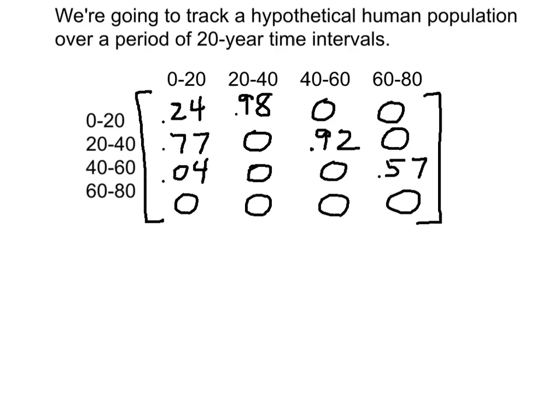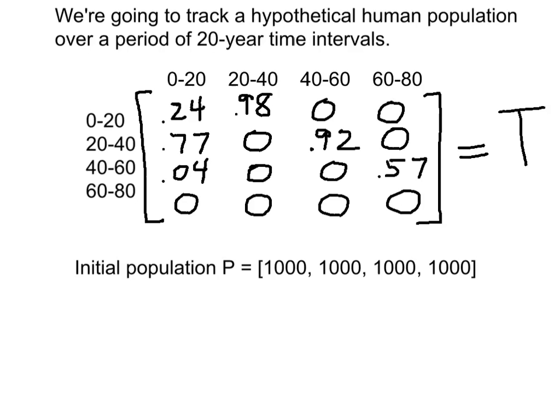So we now have our population dynamics matrix. Let's call it T. And let's suppose we have some initial population distribution that shows us what the breakdown of the population is to start with. For simplicity, we'll suppose that we start out with a population made up of 1,000 people in the 0 to 20 group, 1,000 in the 20 to 40 group, same in 40 to 60 and 60 to 80. So if we want to know what the population distribution looks like after one 20-year period has passed, what do we do? We just multiply P times T.